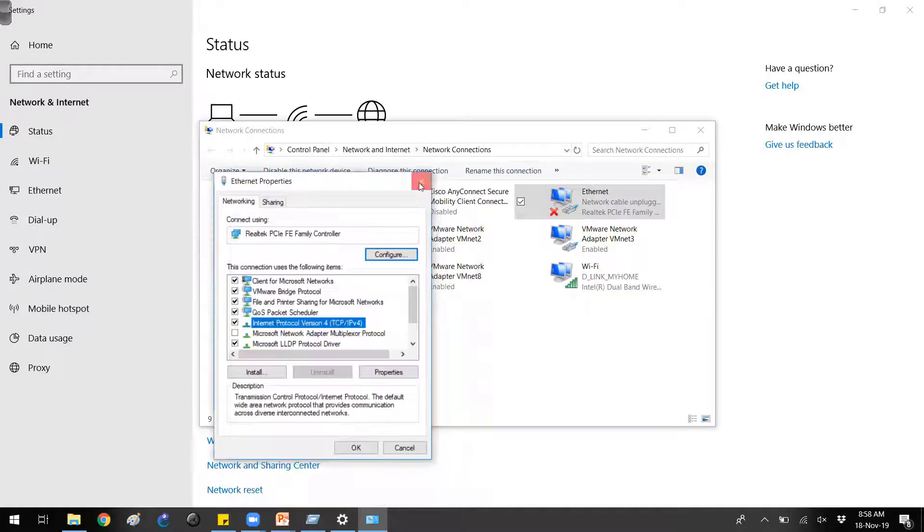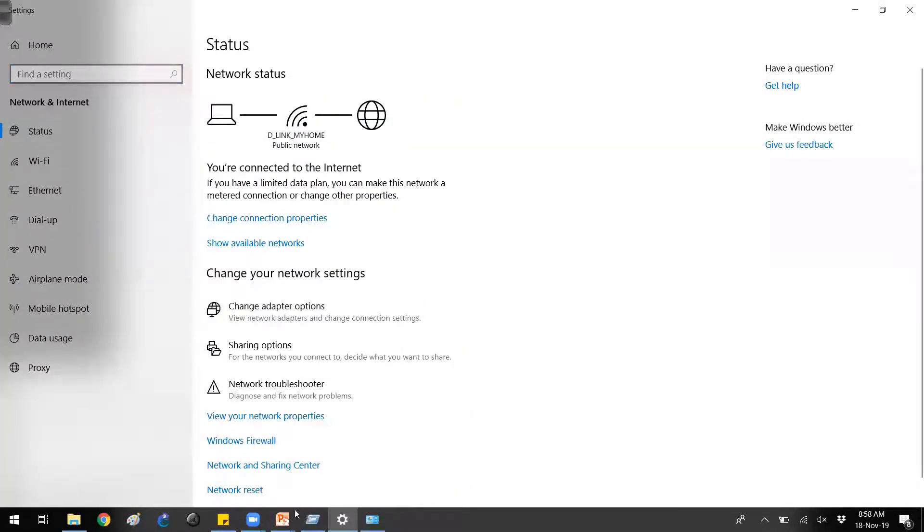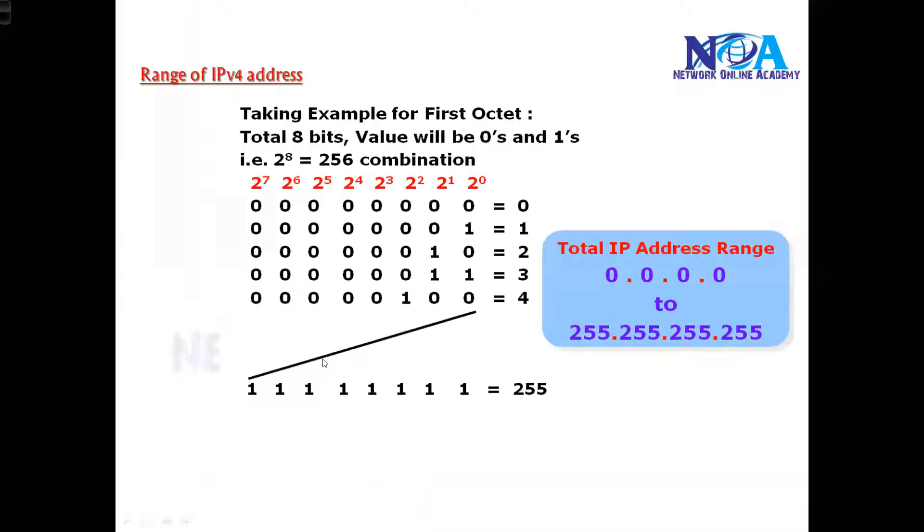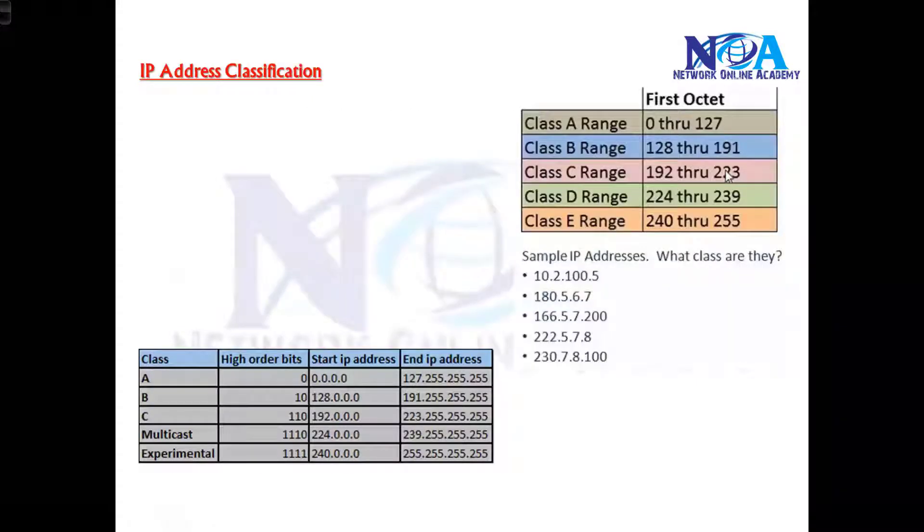The range of addresses is always 255, so you cannot go beyond that. That is the default range of IP addresses. So all zeros and the last address will be all 255. This range of addresses from 0 to 255 is further classified into classes.